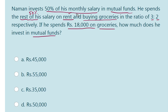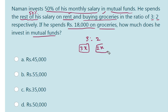So the ratio of rent to buying groceries is 3 to 2. Let us consider it as 3x and 2x. So 3x is the share of rent and 2x is the share of buying groceries. Since he spends 18,000 on groceries, 2x is equal to 18,000.